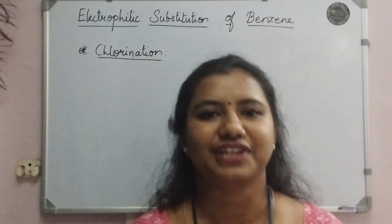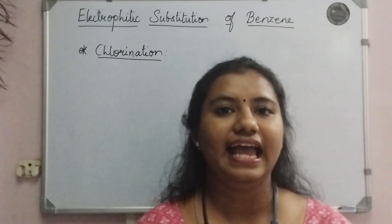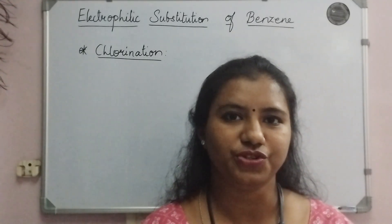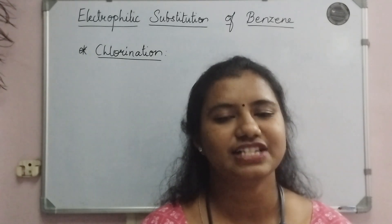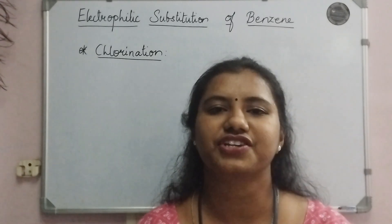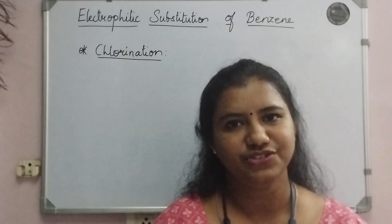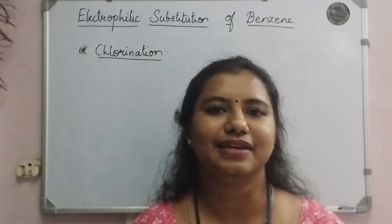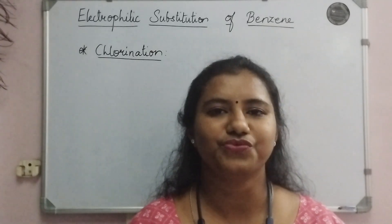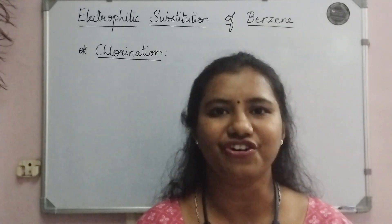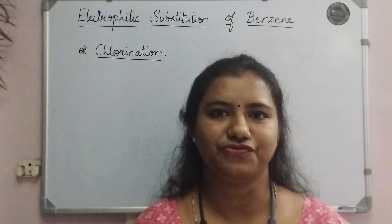Hello everyone and welcome back to the Chemistry Box, your one-step chemistry guide. In today's video, we are going to talk about electrophilic substitution of benzene. The first reaction we are going to cover is halogenation. To simplify halogenation, we have taken chlorine as an example, so we are going to do the chlorination of benzene. Let's check out the one-step reaction for this.